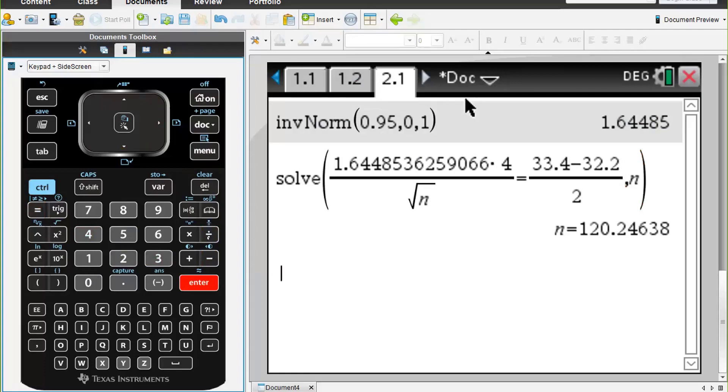So we see that we have 120.24 cavaliers. Now going back to the question, we had to find the nearest integer, so the nearest integer for the sample size of King Charles Cavaliers will be 120.